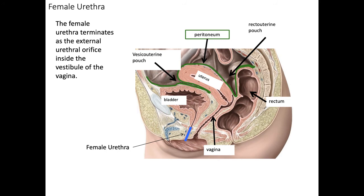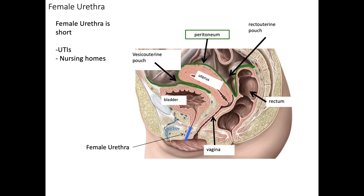Here we can see the female urethra. It terminates as an external urethral orifice inside the vestibule of the vagina. The female urethra is much shorter than the male urethra, which is why females have a higher prevalence of UTIs. Urinary tract infections happen when bacteria enters the urethra and travels to infect the urinary tract — a shorter urethra means a shorter distance for bacteria to travel. Clinically, there is a high prevalence of UTIs in nursing homes, from reasons including higher rates of dehydration, catheters, negligent care, high rates of STDs, and a suppressed immune system.